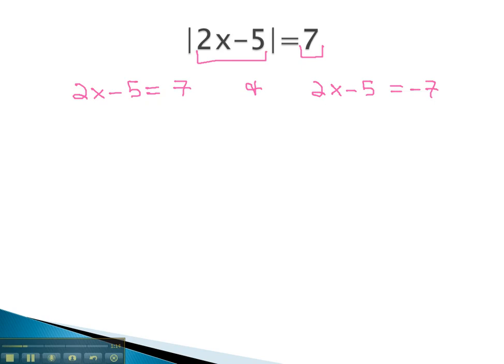As we do this, we now have two equations we can solve to find our two solutions. Let's solve the first equation. As we balance through the equal sign, we first move the term without x by adding 5 to both sides. This leaves 2x equals 12. Next, we divide both sides by 2 to isolate the x. x is equal to 6.